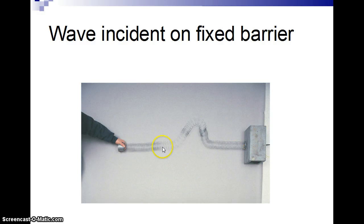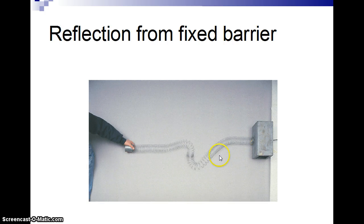And then if you have a fixed barrier, you have a slinky kind of going in upwards, it hits and it reflects down in the opposite direction. So it goes through a 180 degree phase shift. It goes from a peak to a trough.